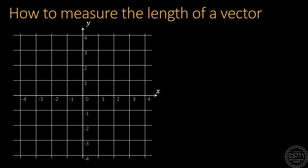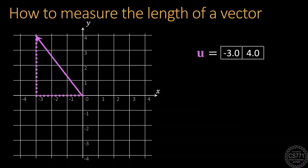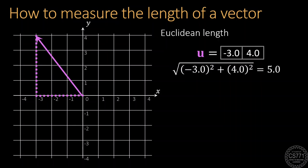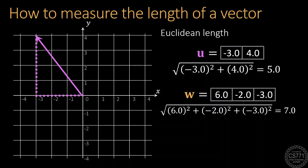In several machine learning applications, we will need to measure the length of our feature vectors. There are several ways to do this. The most common being the Euclidean length, which simply uses the Pythagoras theorem to calculate the length of a vector. Note that this works in all dimensions.